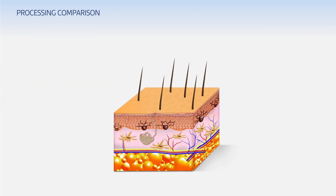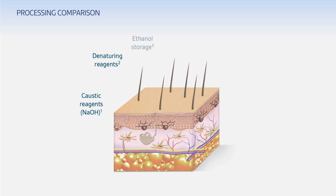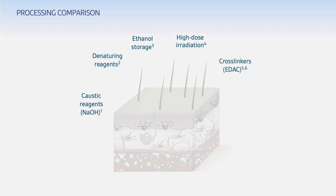Other ADM manufacturing processes use caustic or denaturing reagents that can damage the tissue. Some ADMs are stored in ethanol, which can denature the native structure of collagen, or they're subjected to high-dose irradiation, which breaks down the collagen structure, leading to poorer host response. Cross-linking may incite a pro-inflammatory foreign body response, and heat lamination is not ideal because high temperatures cause the layers to melt together, which damages the collagen.